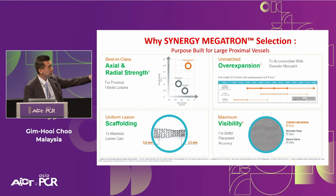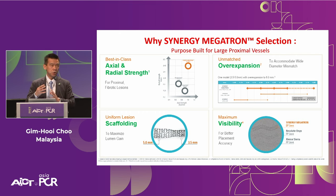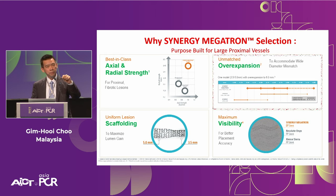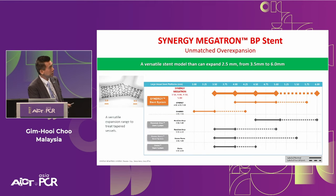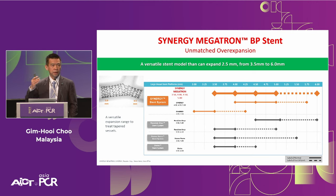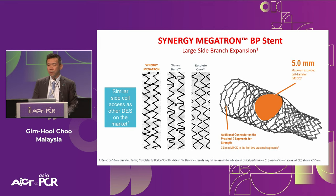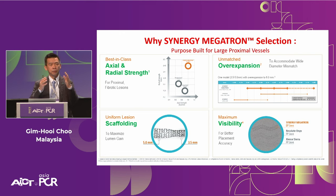Importantly, the stent expansion metrics: treating from left main to LAD, the stent expansion index with a 3.5 can go up to 6 mm — covering most left main diameters. If you're doubtful about the left main size and unable to measure with IVUS beforehand, Megatron will accommodate most of the time. Good side branch access at the left main bifurcation to the circumflex — up to 5.0 access. Radial strength is top of the line. The best way to illustrate this is with another case.